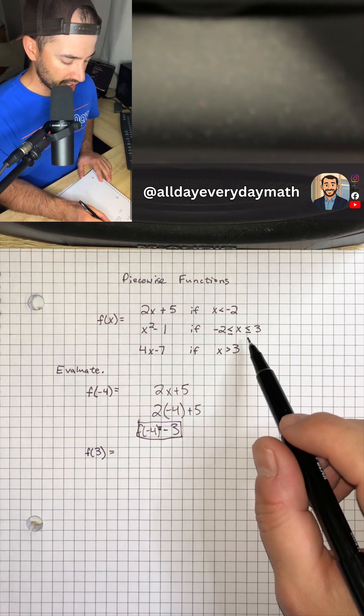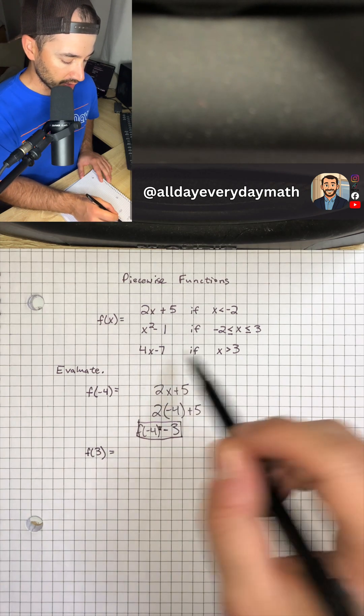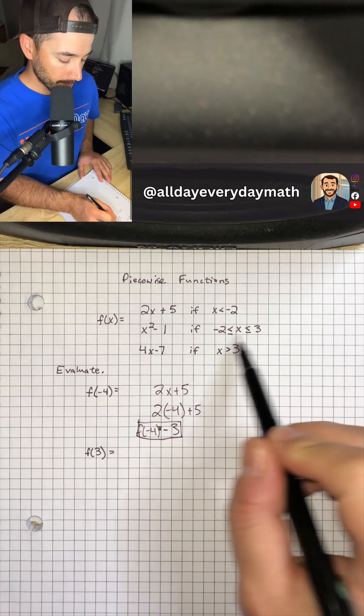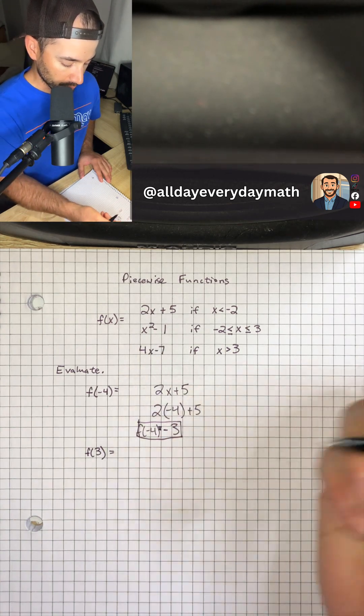And we see that if x is greater than 3, we use 4x minus 7. But if x is equal to 3, we're going to use x squared minus 1. So that's what we're going to do.